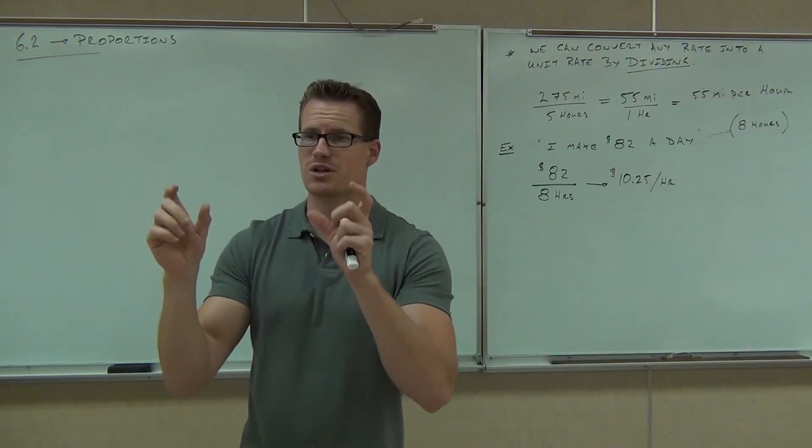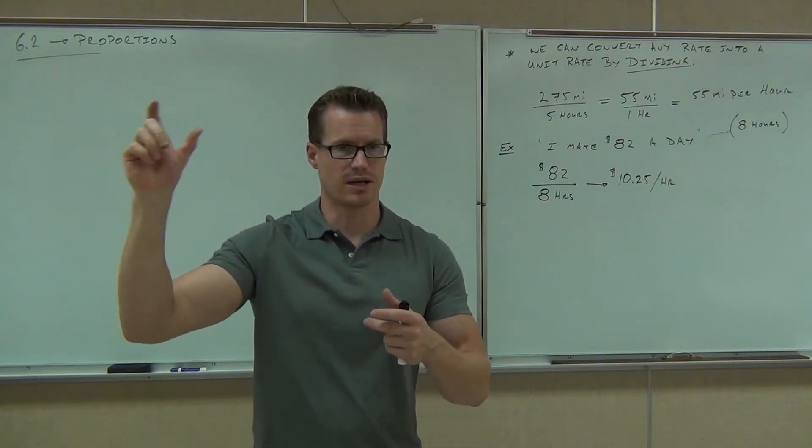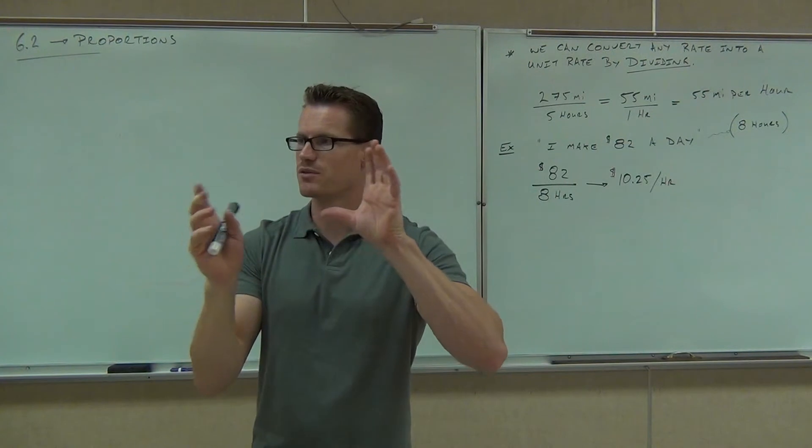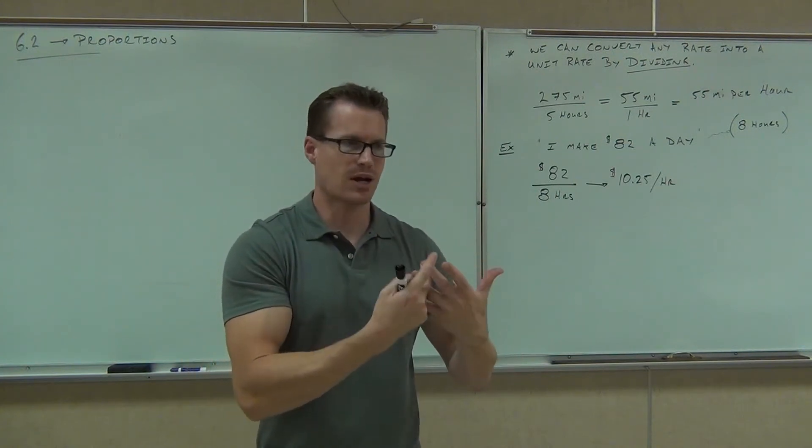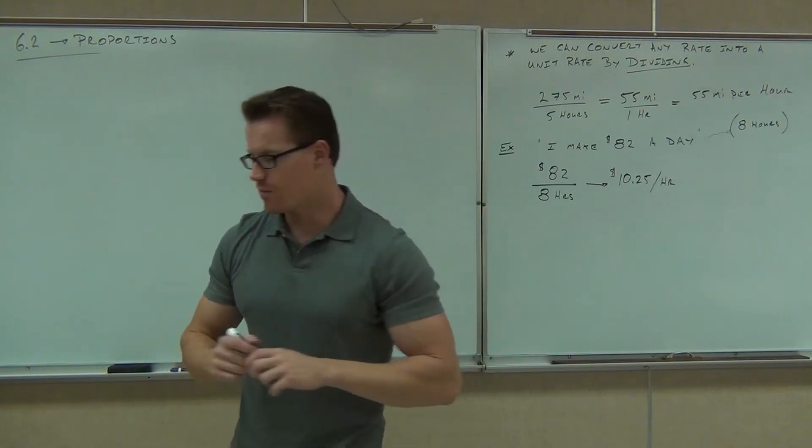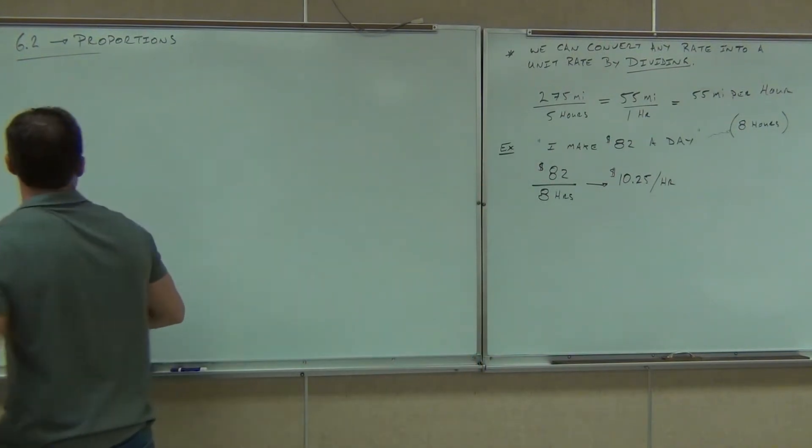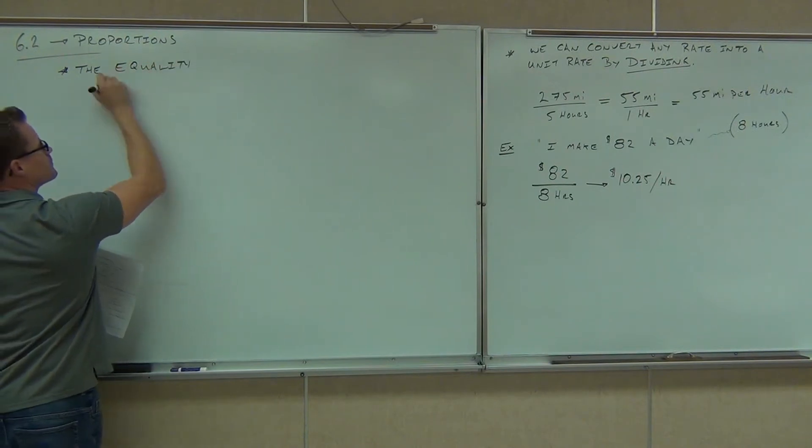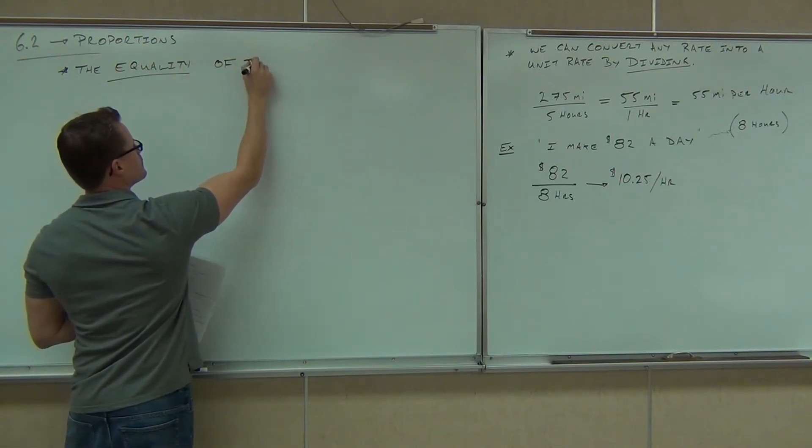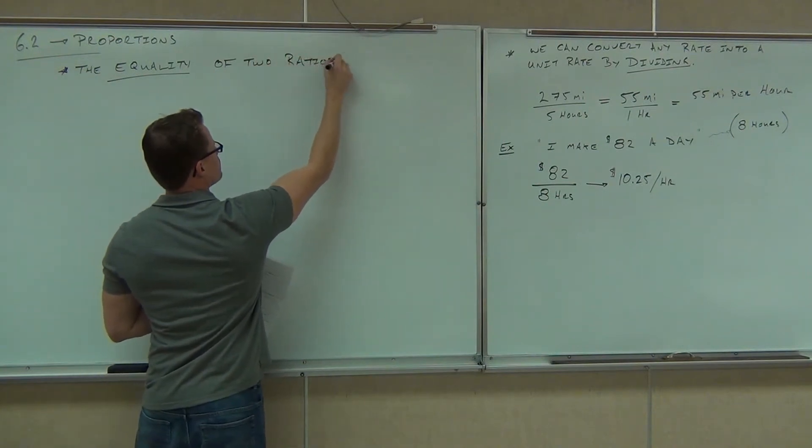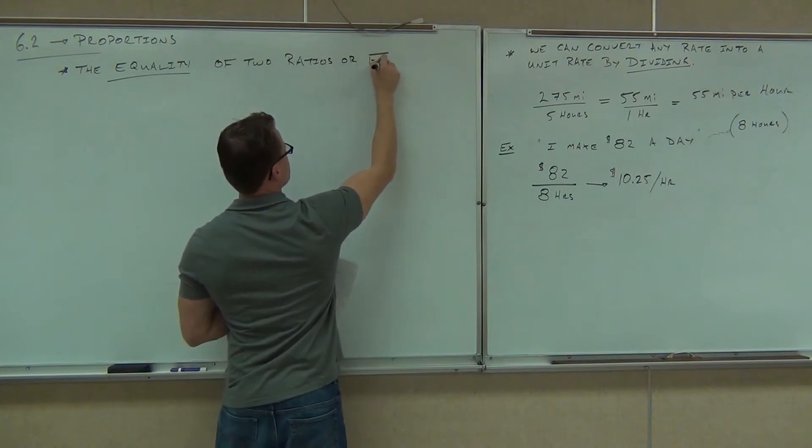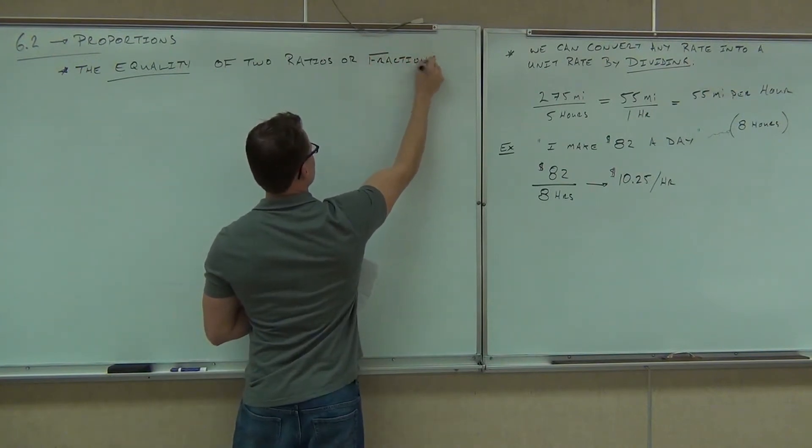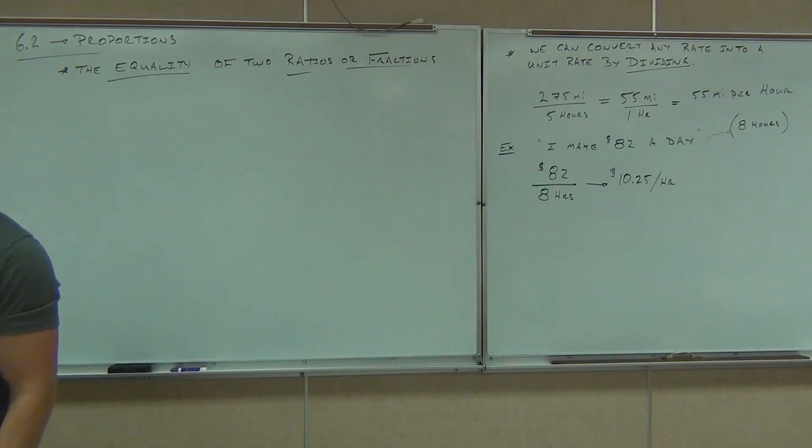Those two things are called a proportion to each other because if you create a fraction out of one of them in relation to, like, a door and a hood surface area-wise, and a relationship between the model car, it's going to be exactly the same fraction. It's going to equal each other. It's just that they're going to be a different value on the numerator and denominator. So basically, when we have the equality of two fractions or ratios, we have what's called a proportion.